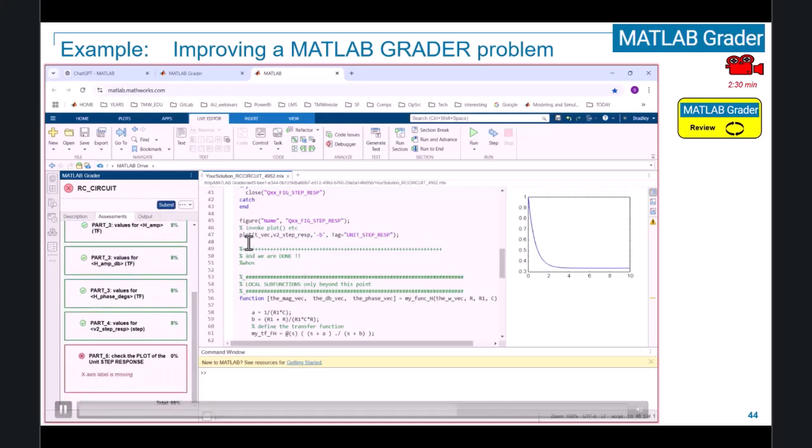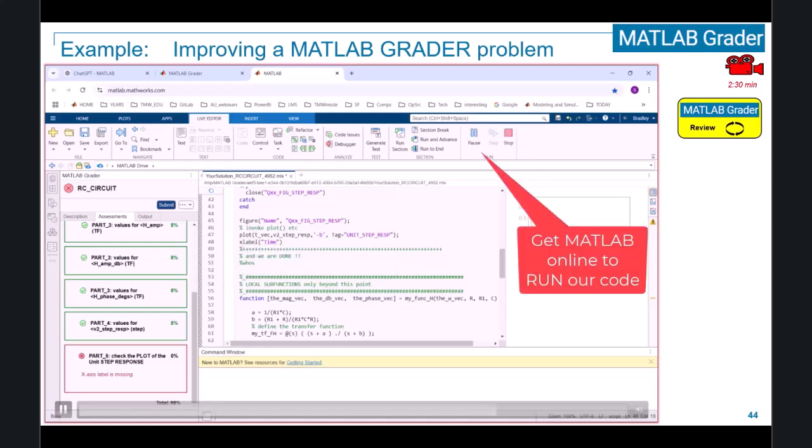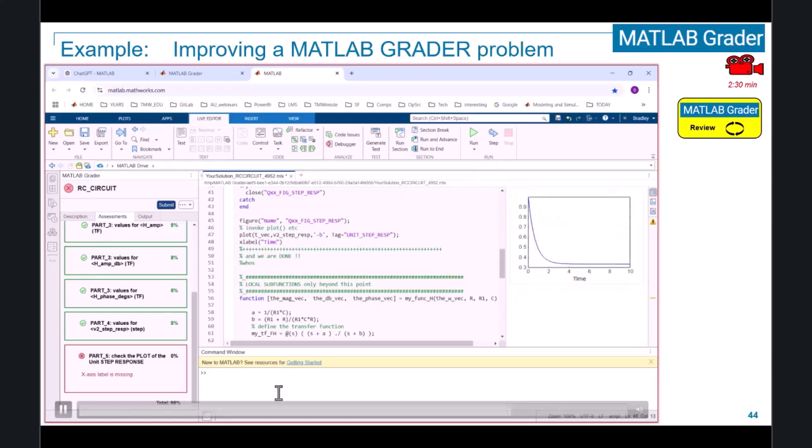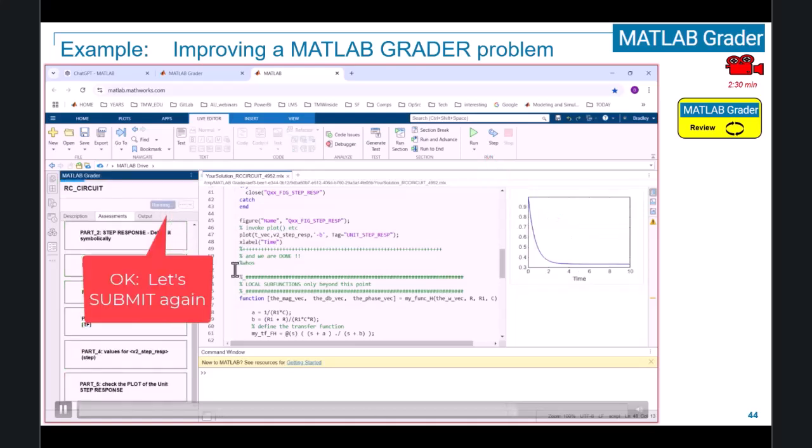But apparently my plot doesn't have an x-axis label. Let me go away and fix that up. And I'm going to run my MATLAB code just to make sure that everything's good. Yep, I see an x-axis label. That's all I've got to do. I hit the submit button.